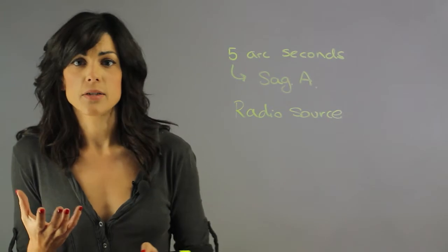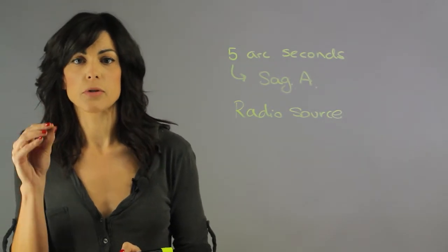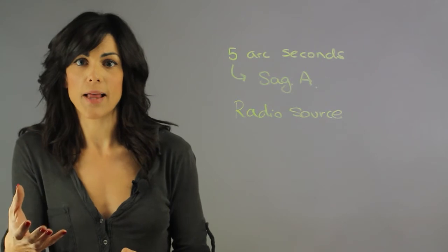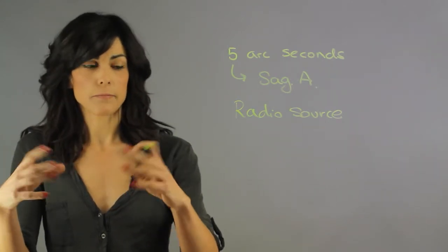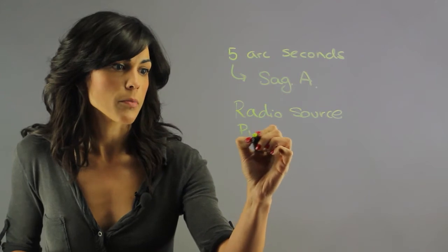And what happens is we also see a pulsating, which is also a very typical characteristic of a black hole. Like these jets are not stationary, they kind of just pulsate. So we also see pulses.